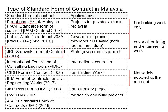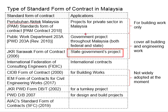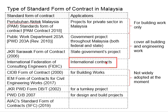Other than that, we have the JKR Sarawak form of contract, which is mainly meant for state government projects, particularly in Sarawak. We also have the FIDIC contract, which is an international contract. There is also the CIDB form of contract, the IEM form of contract, and others.